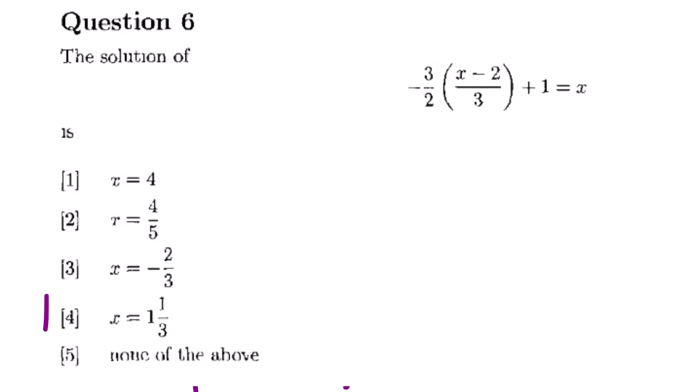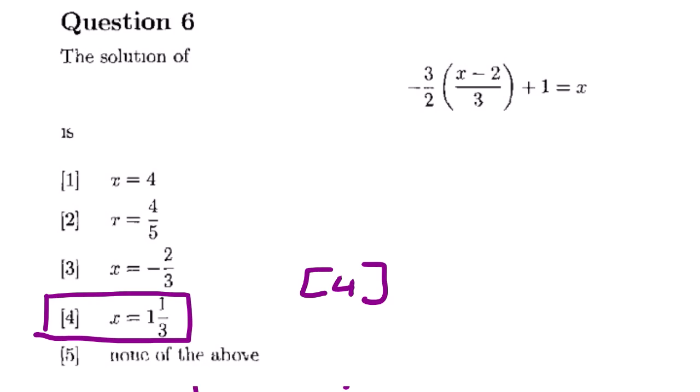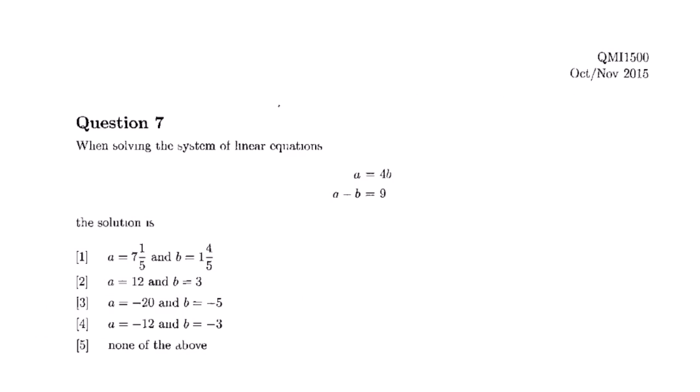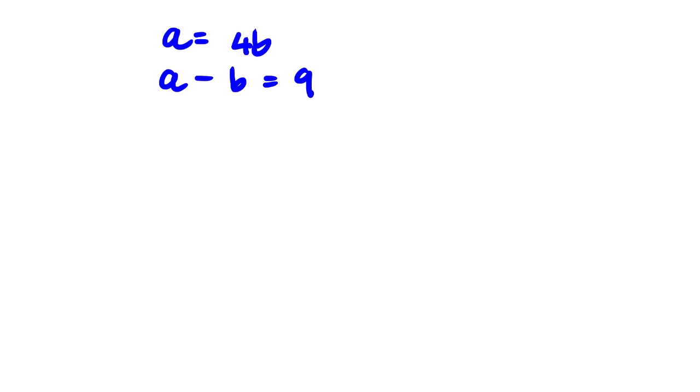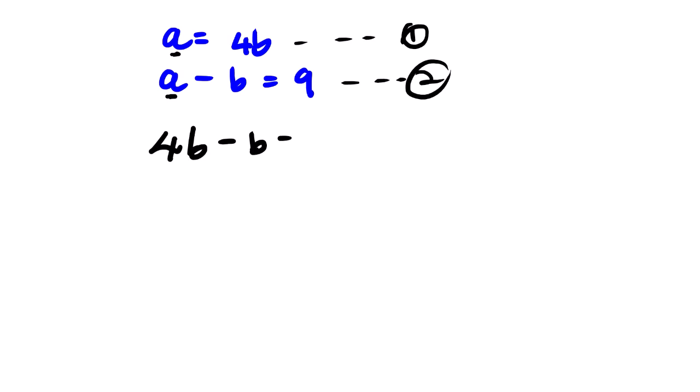That is option 4 again. Our next question involves solving the system of linear equations where a equals 4b and a minus b equals 9. We need to find the solution from the given options. We are still dealing with a simultaneous equation, so we substitute a equals 4b directly into equation 2.